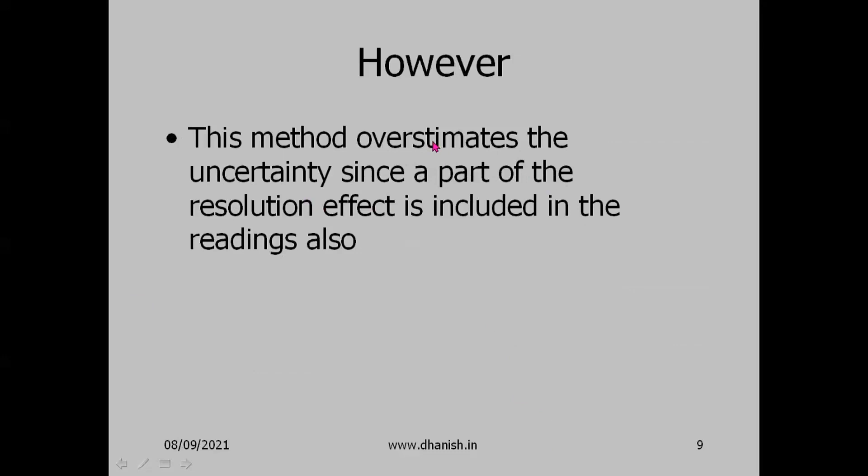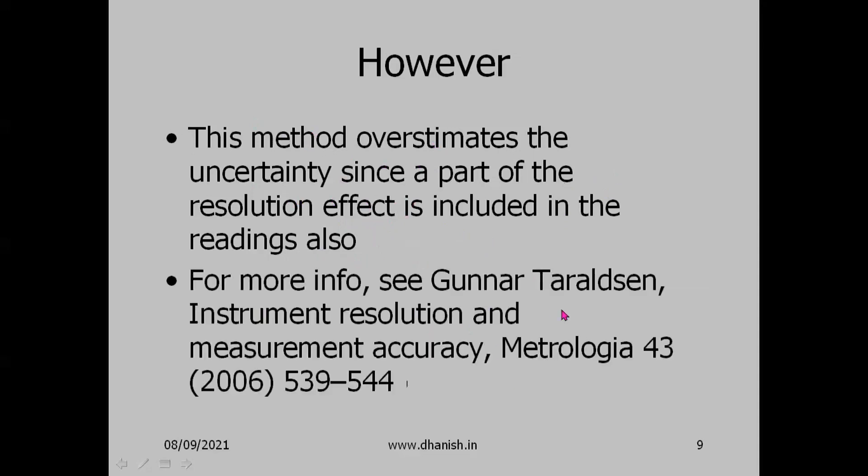Now we have taken the uncertainty of the least count also, of the resolution also. But this method overestimates the uncertainty since a part of the resolution effect is included in the readings also. Because if the readings are different, some variability in the resolution will be added in the readings also. So it slightly overestimates the uncertainty, but of course we don't have any better method. This problem is discussed in a paper in Metrologia published in 2006 by Gunnar Taraldsen: Instrument Resolution and Measurement Accuracy. Thank you.